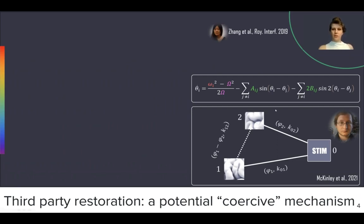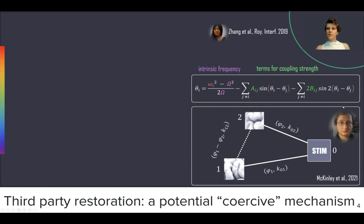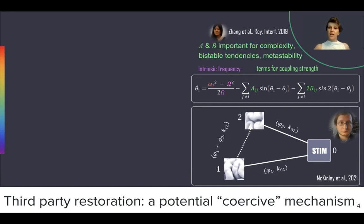You will recognize in the equations something that resembles the well-known Kuramoto model that computational neuroscientists are often familiar with — the first-order coupling term, A_iG sine of (phi_i minus phi_G) — as well as the second-order coupling term, which comes historically from the study of coordination dynamics in behavior and in the brain. It is called the Haken-Kelso-Bunz model, or HKB. This second-order coupling term is absolutely fundamental for bistable tendencies and metastability.